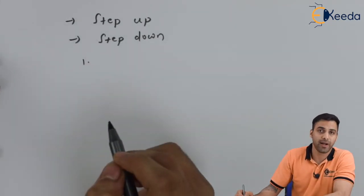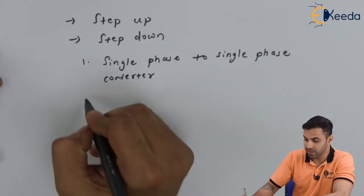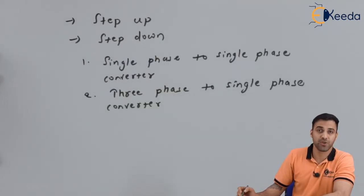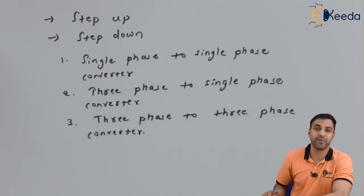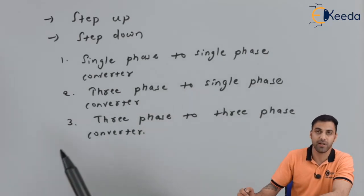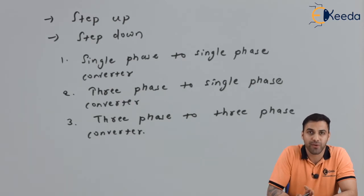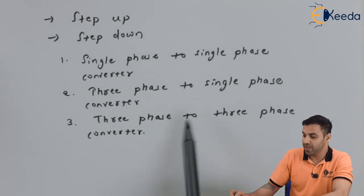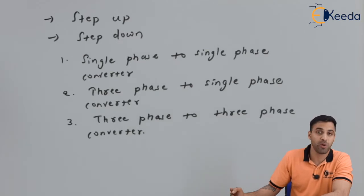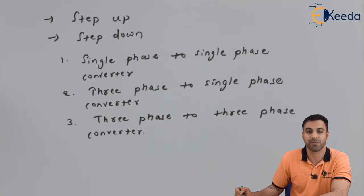Cycloconverters are further divided into three types based on phase configuration. The first is a single phase to single phase converter, where the input is a single phase AC and the output is also single phase AC with a variable or different frequency. The second is a three phase to single phase converter, where the input is three phase AC and the output is single phase AC with a different or multiple frequency as per the control.